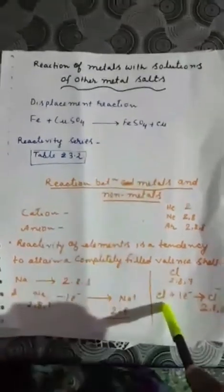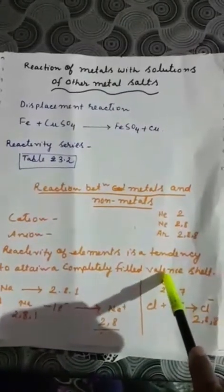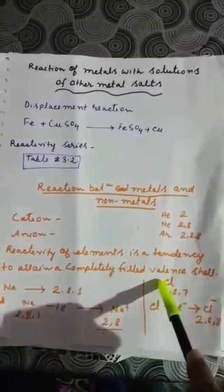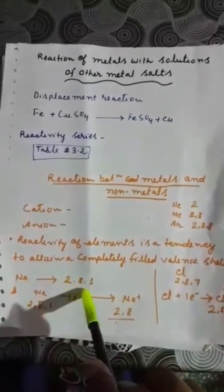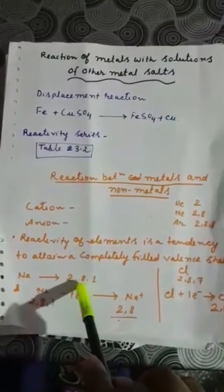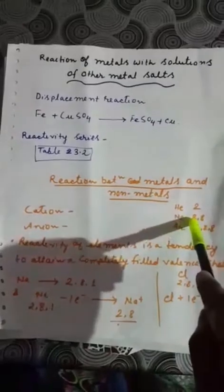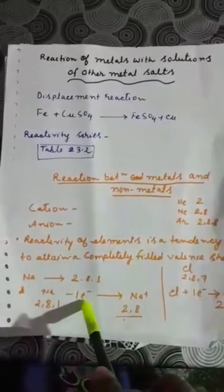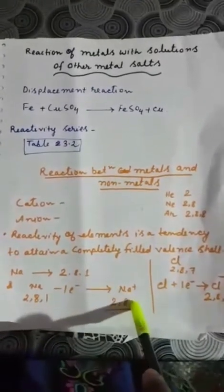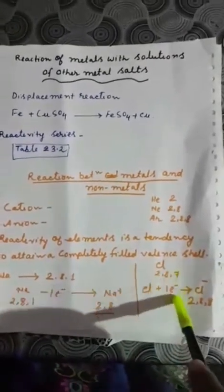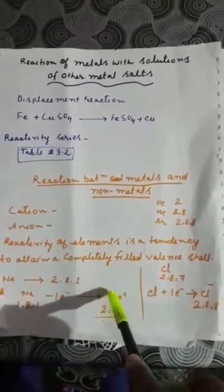The reactivity of elements is the tendency to attain a completely filled valence shell — valence shell means the last shell. Sodium has 11 electrons, so its electronic configuration is 2, 8, 1. It will lose one electron to become like the noble gas neon. It loses one electron and becomes positively charged — one positive. Similarly, chlorine will take one electron and become like argon with configuration 2, 8, 8.